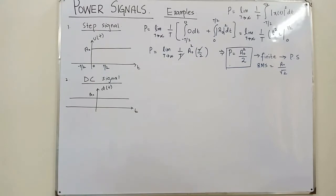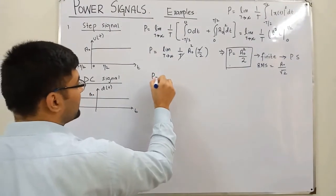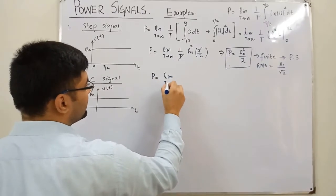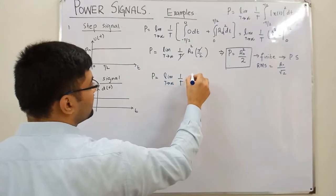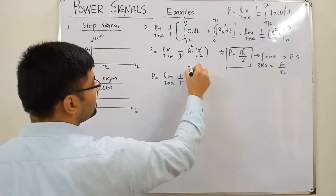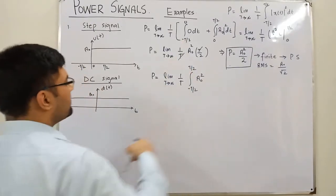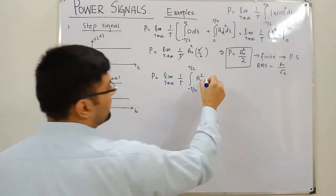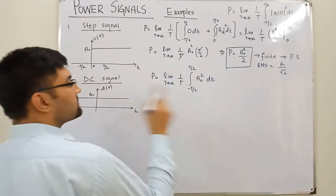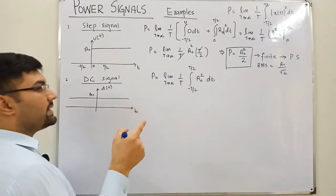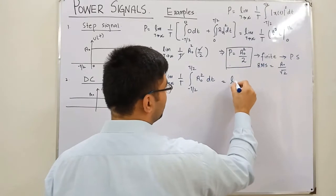For the DC signal, we do not need to split the integration because the value is the same throughout the entire axis. So the power is equal to limit T approaching infinity of (1/T) times the integral from -T/2 to +T/2 of |a₀|² dt. Since a₀ squared is constant, it comes out of the integral, and the integration of 1 with respect to t gives t.